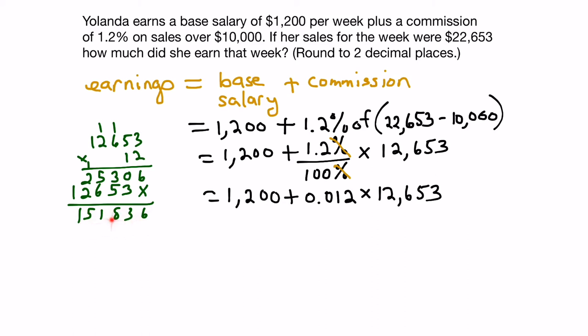So we end up with this number here. Now we've got to figure out where to put the decimal. Well, we look to our number here that has a decimal in it, and we have 1, 2, 3 decimal digits. So what we have to do is move the decimal here over 1, 2, 3 places. And we will end up with 151.836.